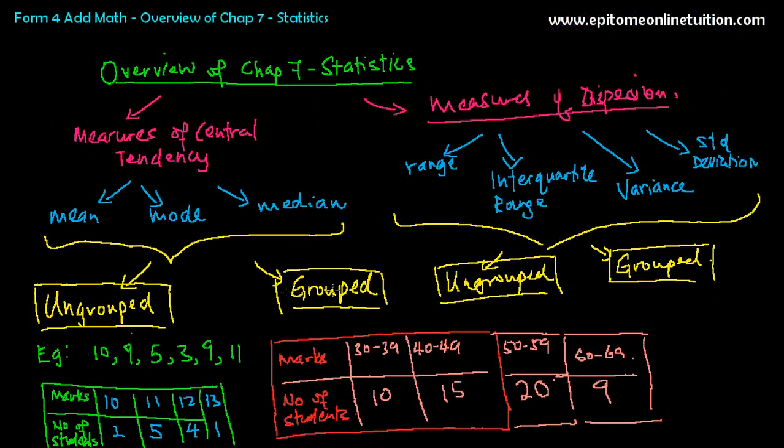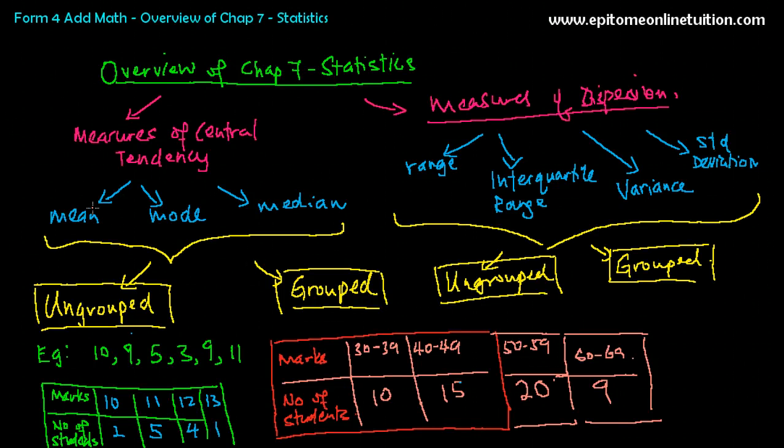And then, that's it. This is all there is on statistics. So it's not a very big chapter. You just have to be very clear of what you're going to learn. The first part of chapter 7, I'm going to teach you measures of central tendency, then we'll move on to measures of dispersion. So let's go through the worksheet, shall we?